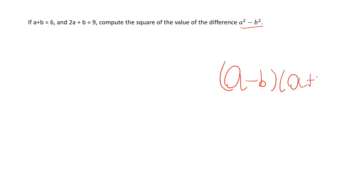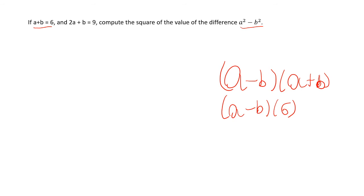Now, a plus b is 6. So we have a minus b times 6. And 2a plus b is equal to 9. Let's expand: 6 times a minus b gives us 6a minus 6b using the distributive property.